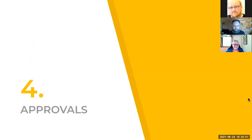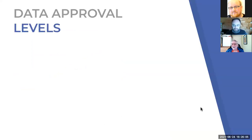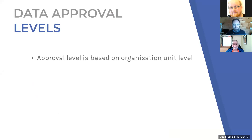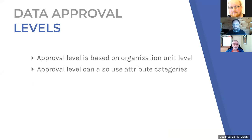Jim is now going to talk about data approvals. I'm going to cover two parts: first, how data approvals work with organization units so you get the basic idea; then, how approval levels can also use the attribute categories Ben just introduced — which is where things get interesting and less intuitive.